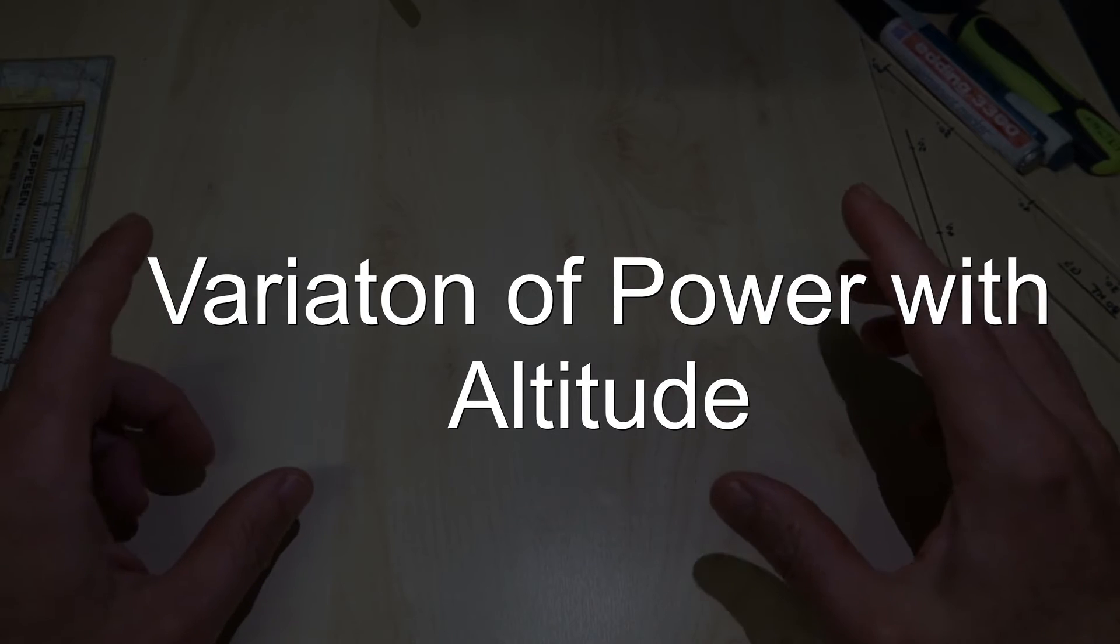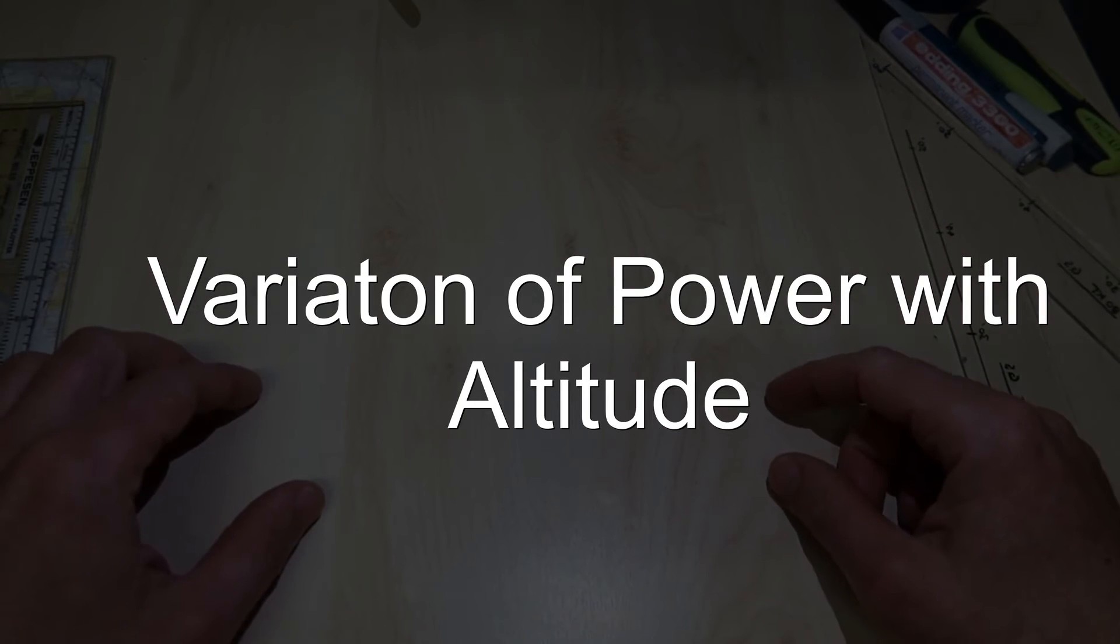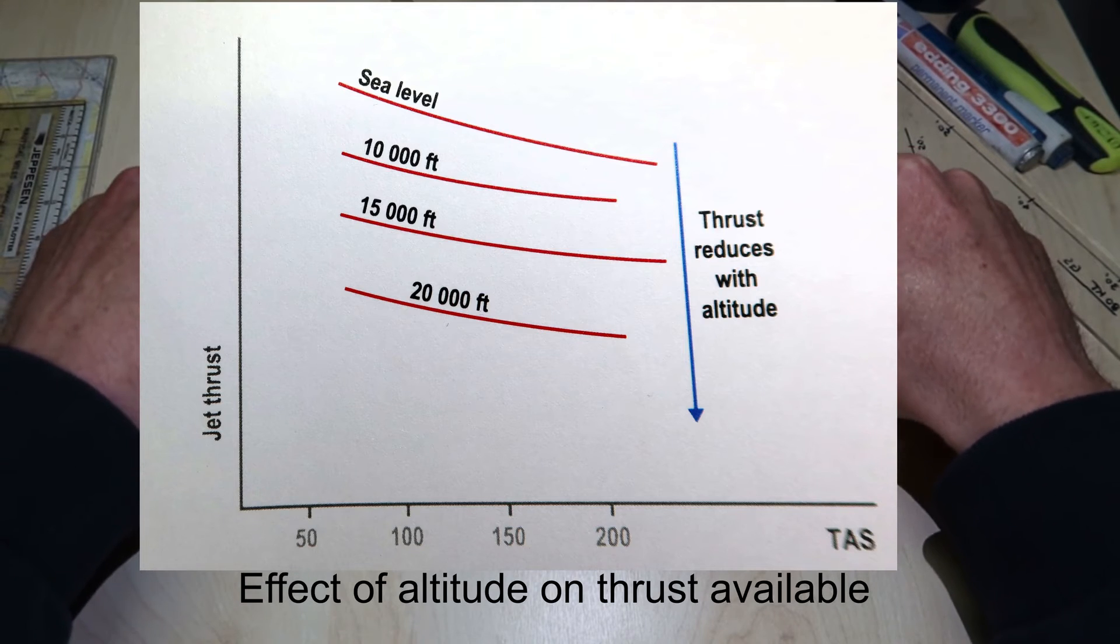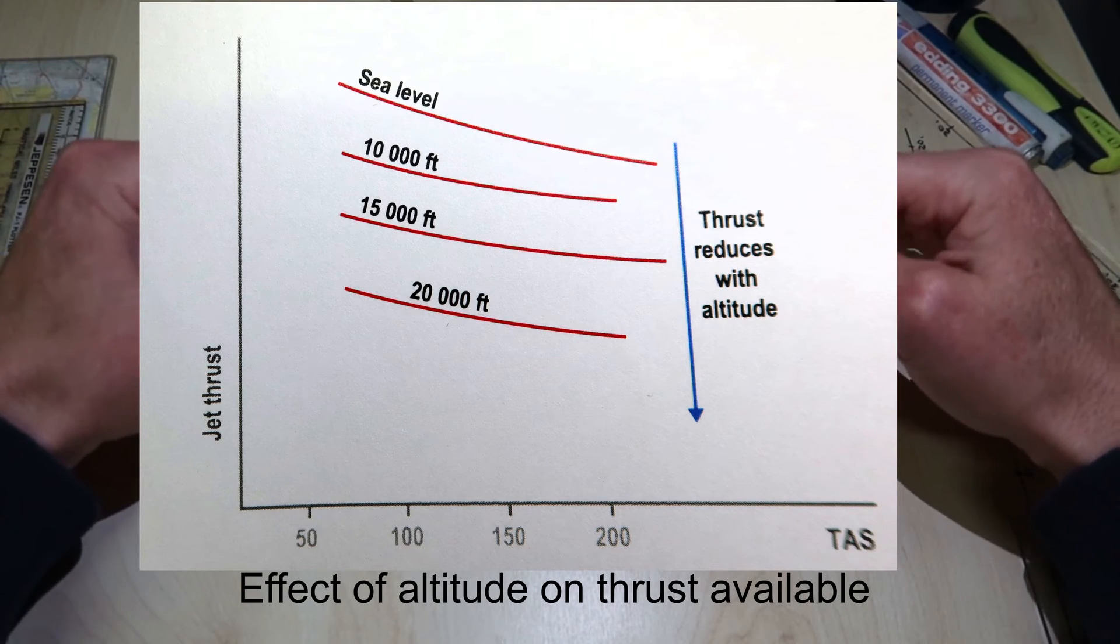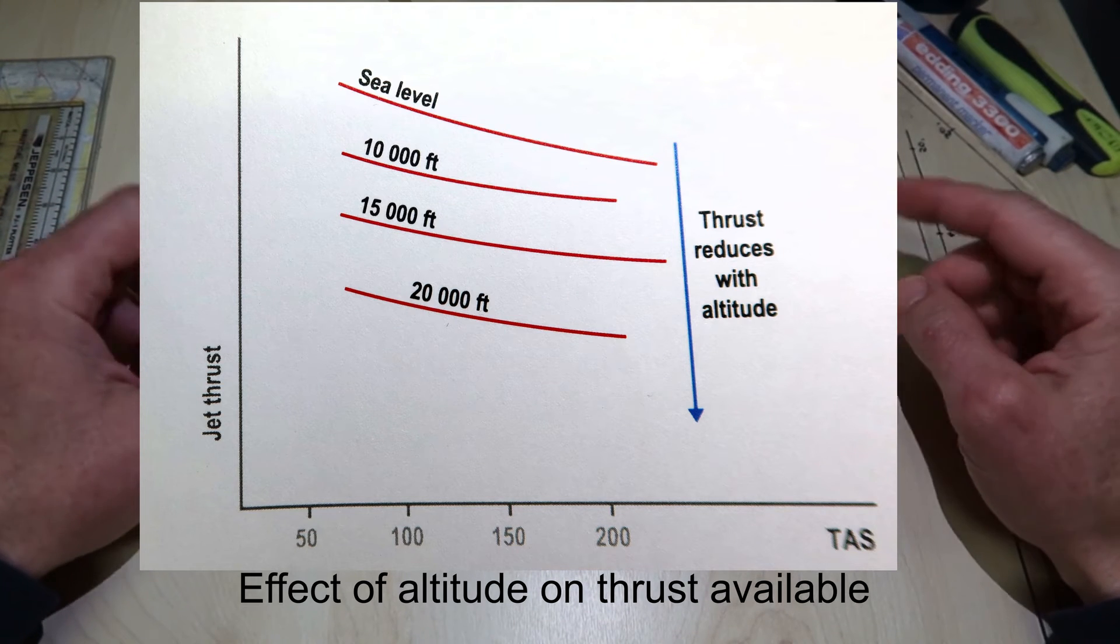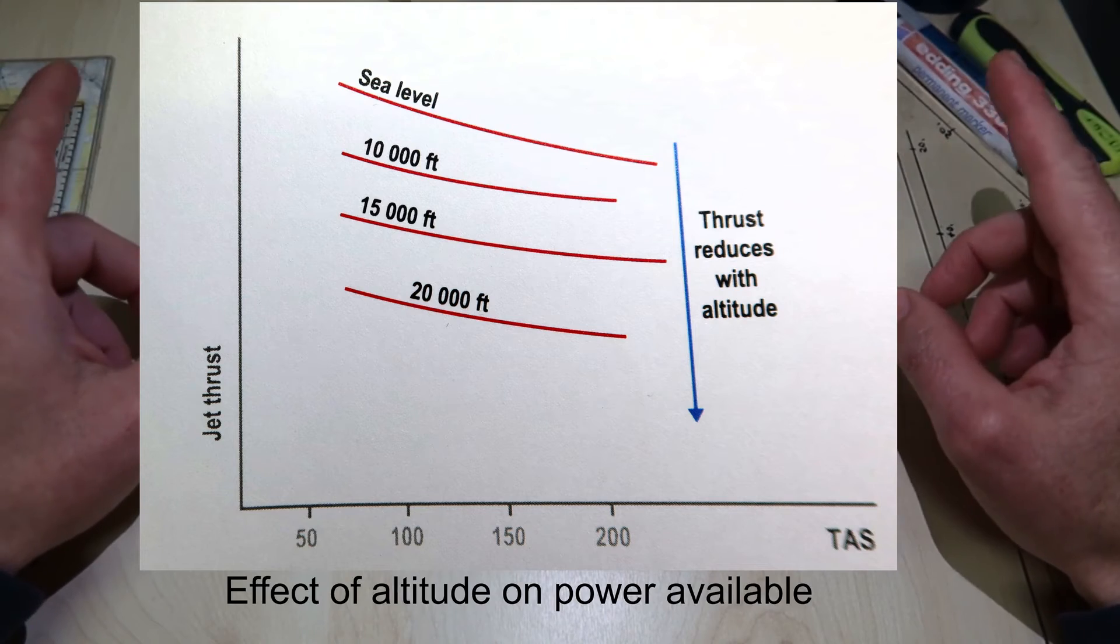Variation of power with altitude. As altitude increases, the air density and therefore the mass of air being accelerated reduces. This causes the thrust and therefore output power to decrease with increasing altitude.